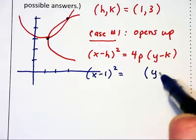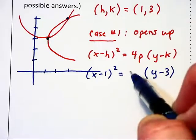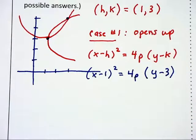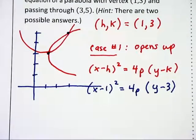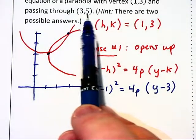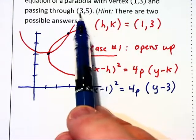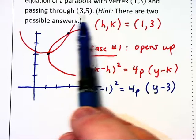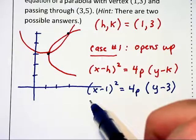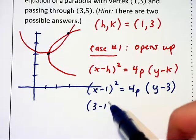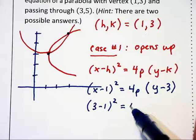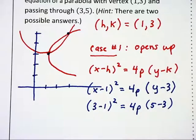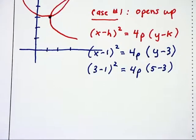But we don't know what the value of p is. That's where this other point comes in. That point is on the curve, therefore, it satisfies the equation of the curve, and can be substituted in for x and y. When you do that, you have 3 minus 1 squared equals 4p times 5 minus 3, which is an equation that can be solved for p.